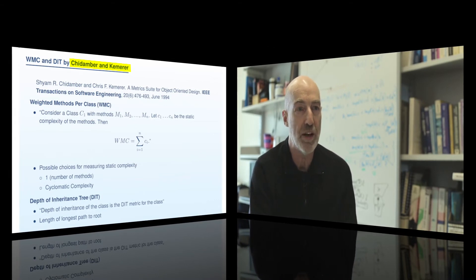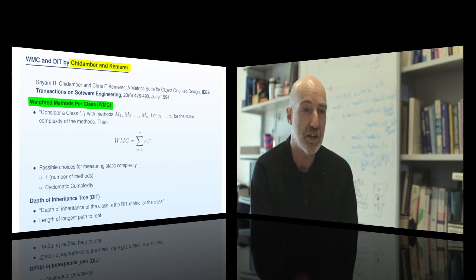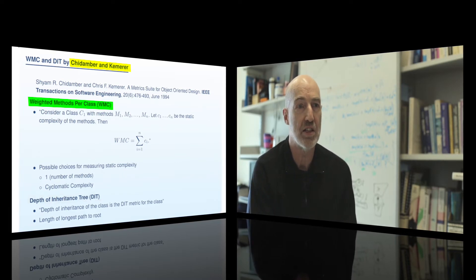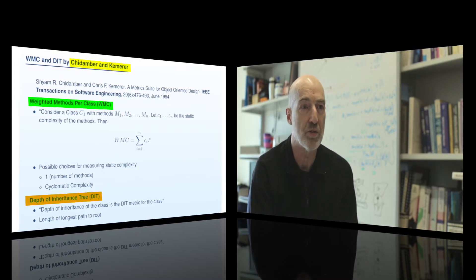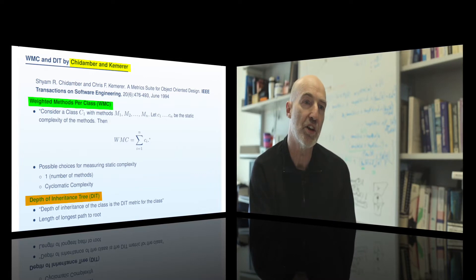One was weighted method count, which is essentially just a count of the number of methods in the class, and the other is depth in inheritance tree, which is for a given class how deep it is in the inheritance hierarchy.